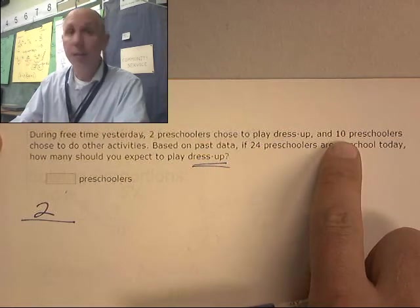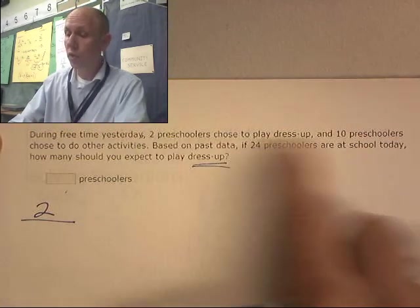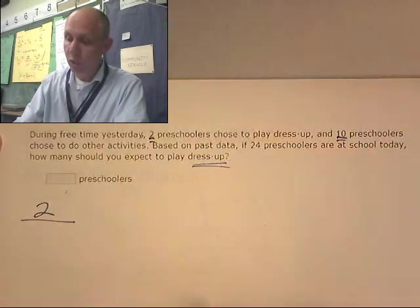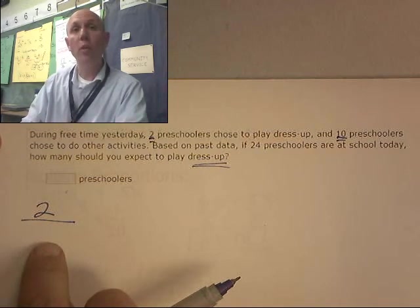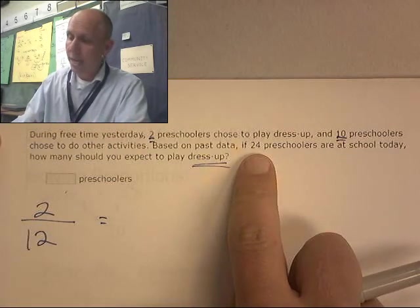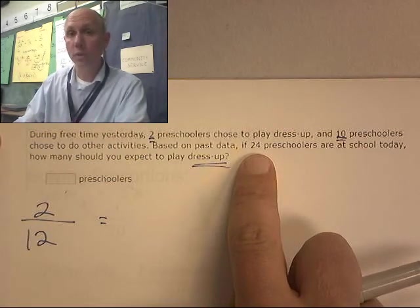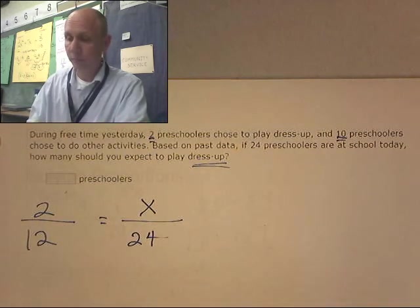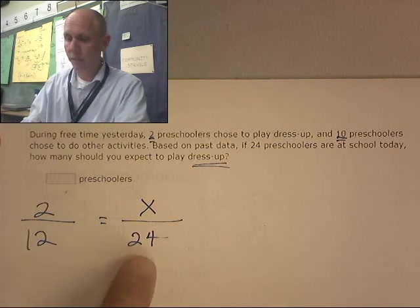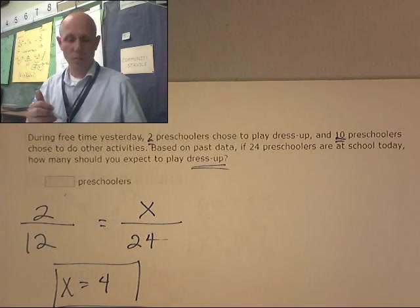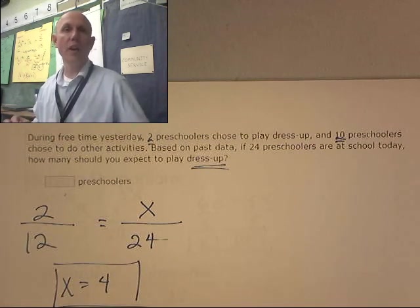Is it two out of 10? No, it's two out of 12. I have 10 that are not playing dress up, two that are. This is the favorable out of all. And now, we're looking at 24 preschoolers. How many are playing dress up? Well, it looks like we're doubling the values. 12 to 24, 2 to 4. So, four preschoolers. X equals 4. All right. That was a good one. I'm going to go have some more Teddy Grahams.